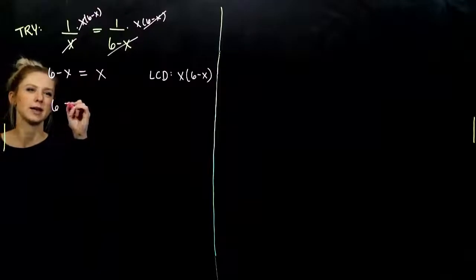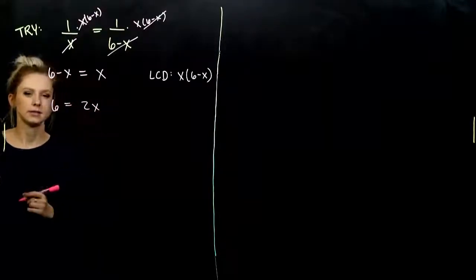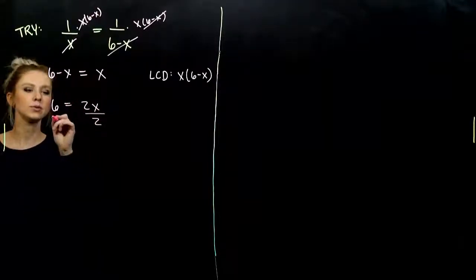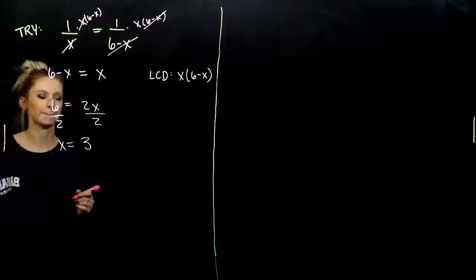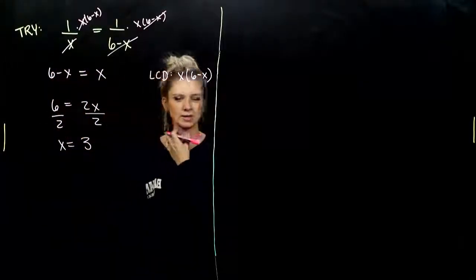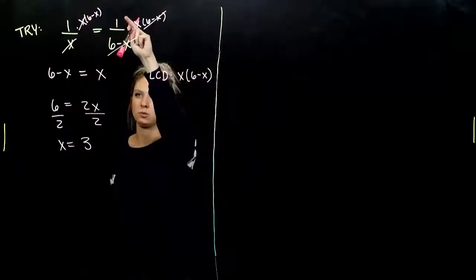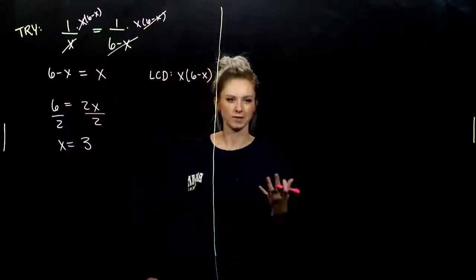So getting our terms on the same side, two x's together, dividing by 2. What value did you get out for x? 3. And again, we can plug that in pretty quick and check. Is 1 third really equal to 1 over 6 minus 3? Yes.